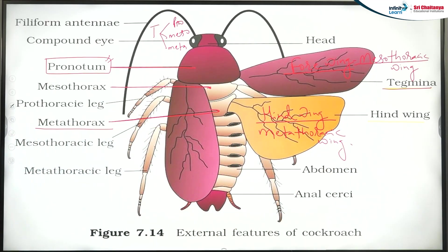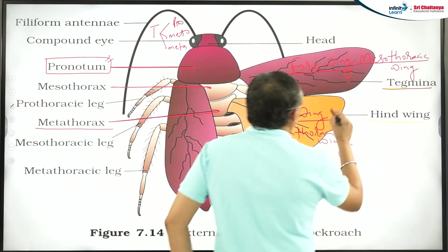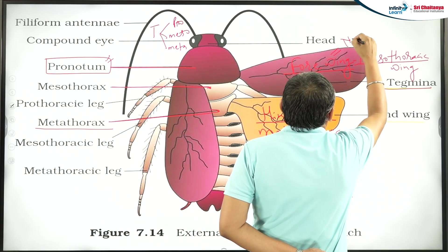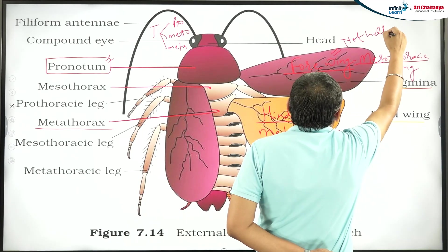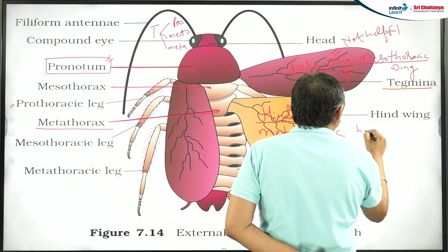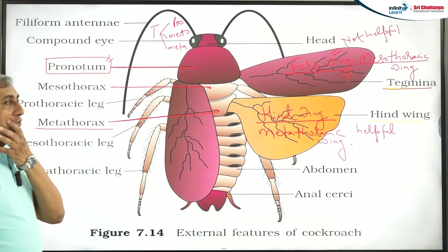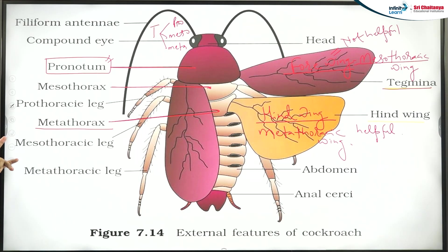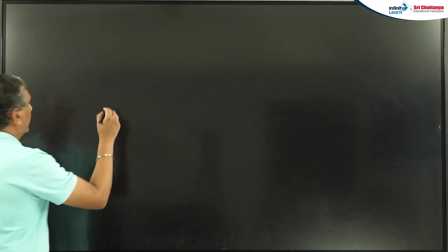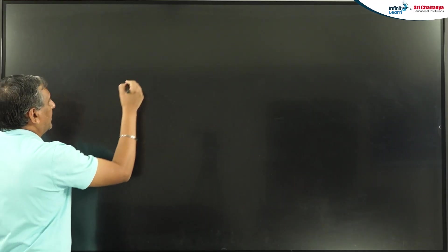There are four wings total. The fore wings are the mesothoracic wings and the hind wings are the metathoracic wings. The important difference to remember: the four fore wings are not helpful in flying, whereas the hind wings are helpful in flying. They are having four wings and hind wings — the fore wings are related with the prothorax region.